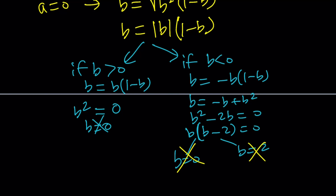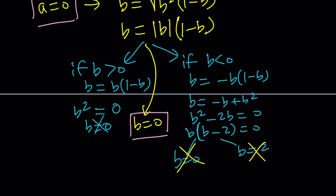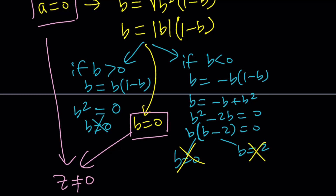We need to look at B equals 0 separately. If B equals 0, the equation is satisfied. So if A equals 0 and B equals 0 — wait, A and B cannot both be 0 at the same time, because we established that Z cannot be 0. So we have to abandon these values. A equals 0, B equals 0 is not going to work, and we have to use the other case.